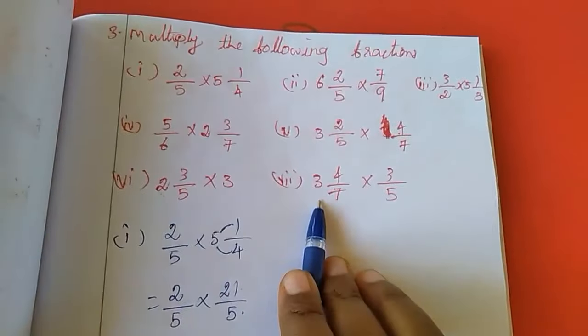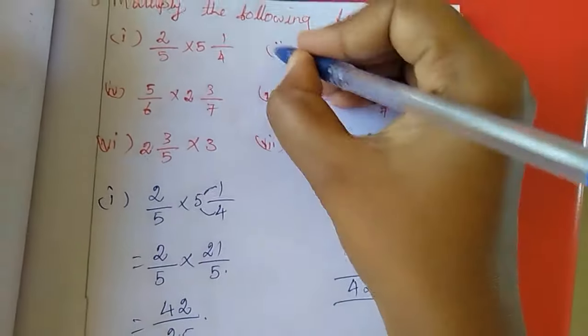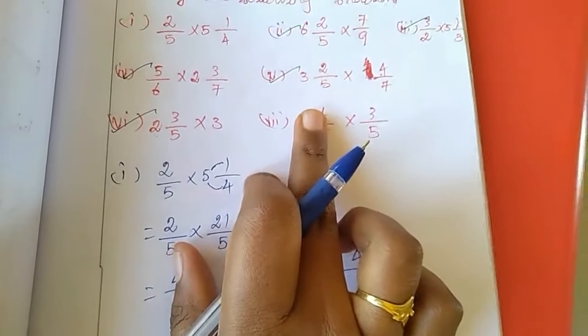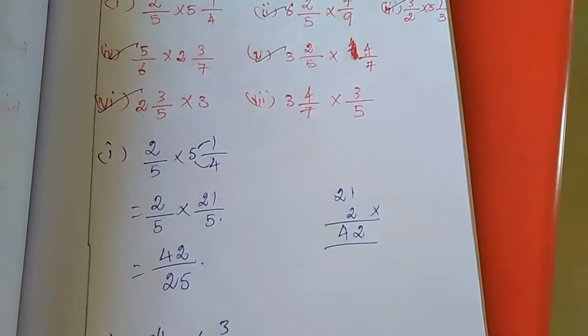Here 1st sum and 7th sum I completed. Balance sum is homework for you, that is 2nd, 3rd, 4th, 5th, 6th. These 5 sums are homework for you. And now we will move to the 4th sum.